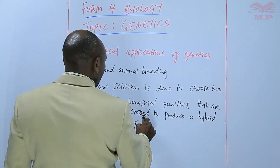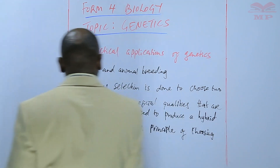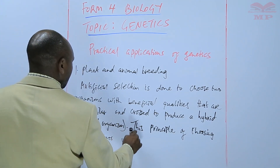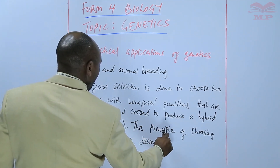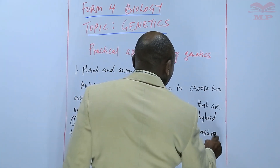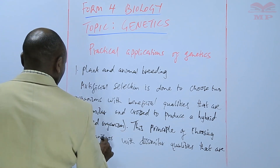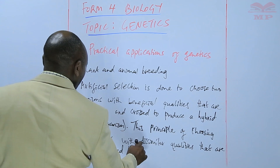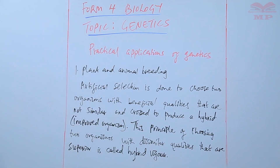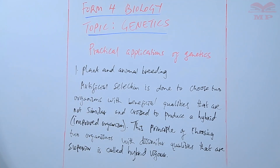The principle of choosing two organisms with dissimilar qualities that are superior is called hybrid vigor. You look for the vigor in one organism and another, and then bring the two together to form a hybrid. The principle behind that is called hybrid vigor.